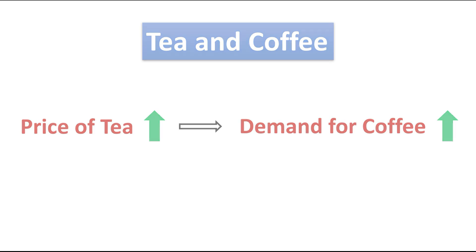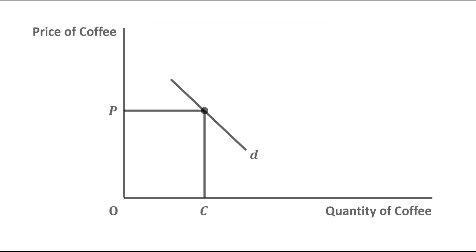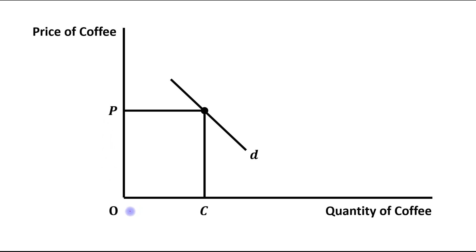Let's understand this with the help of a diagram. On the vertical axis we have taken price of coffee and on the horizontal axis we have taken quantity of coffee. This is the initial price of coffee which is OP, the initial quantity demanded is OC units of coffee, and this is the initial demand curve D for coffee.